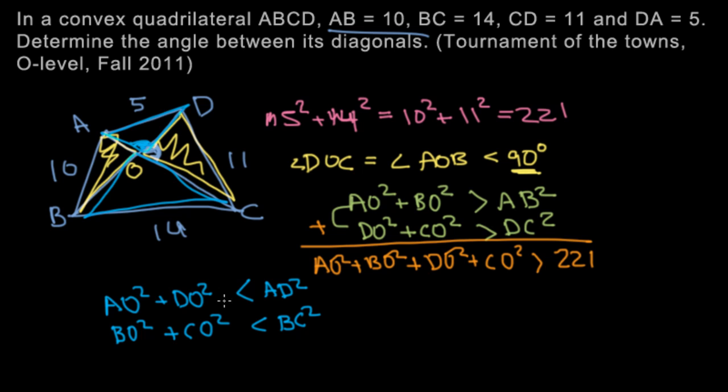So we're going to do the same thing. Add these two. What we get is the same left-hand side as this right here, which would be AO squared plus BO squared plus DO squared plus CO squared, but it's less than AD squared plus BC squared, which is 5 squared plus 14 squared, which we said here in the beginning is 221.